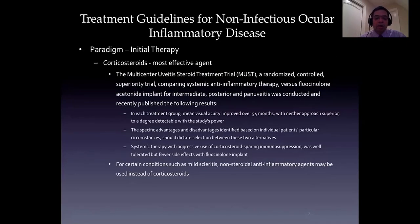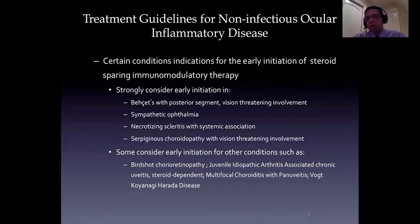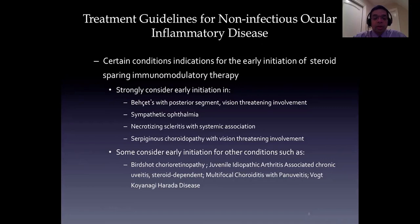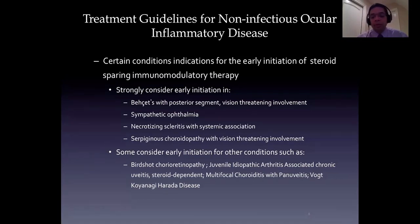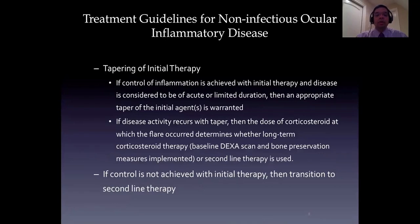Sometimes mild scleritis or episcleritis can be treated with non-steroidal anti-inflammatory agents. There are some conditions where steroid-sparing immunosuppressive therapy in non-infectious uveitis should be considered very early: Behcet's disease with vision-threatening involvement in the posterior segment, sympathetic ophthalmia, necrotizing scleritis especially with systemic vasculitis, serpiginous choroiditis with foveal-threatening involvement, birdshot retinochoroidopathy, juvenile idiopathic arthritis, and Vogt-Koyanagi-Harada syndrome - these are the usual suspects for initiation of steroid-sparing immunosuppressive therapy.